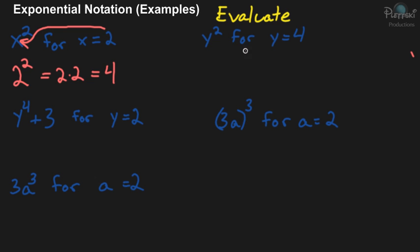Okay, this next one, y squared for y equals 4. So we're going to substitute the 4 in for the y. So it becomes 4 squared. The 2, or 4 to the second power is another way to read that. But the 2 tells you that 4 is going to be multiplied by itself. So you're going to have 2 of the 4s. So 4 times 4 is going to give you 16.